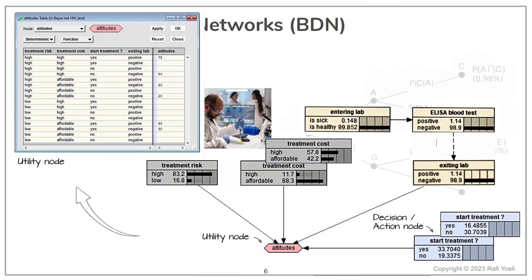To illustrate how this works, look for example at the fourth line from the bottom. What this line actually says is that for a combination of low treatment risk, low treatment cost, and positive result from ELISA, the preferred decision is yes. The conviction that this is a good decision was given a rating of 90 by whoever configured this utility node.